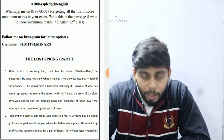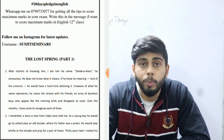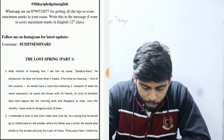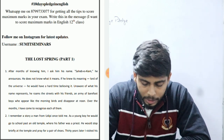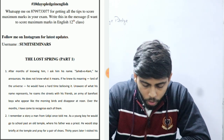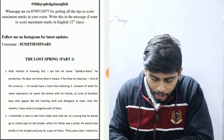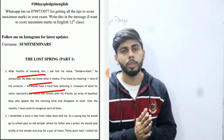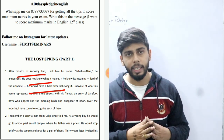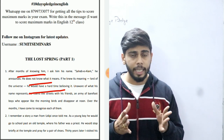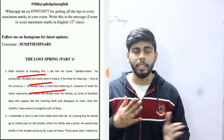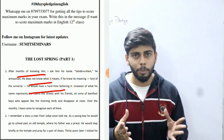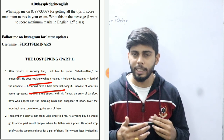Opening the first paragraph of the NCERT book: 'After months of knowing him, I asked him his name. Sahebiyalam, he announces. He does not know what it means. If he knew its meaning — Lord of Universe — he would have a hard time believing it.' This is a very important point. The question is about the irony of his name — irony means something which is the opposite of what is shown.